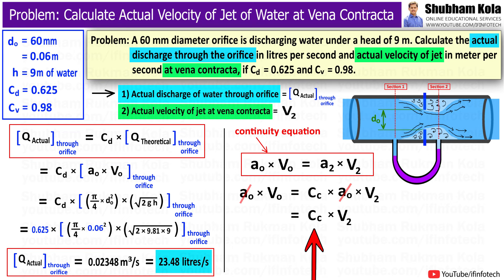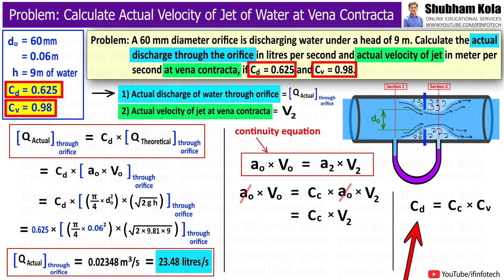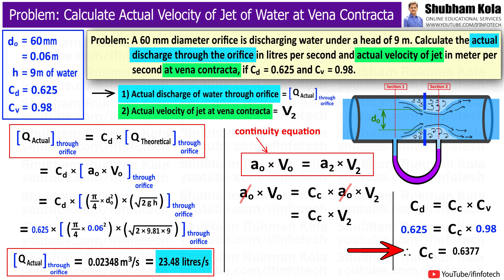Here CC is the coefficient of contraction, which we can calculate using the values of CV and CD, because CD = CC × CV, where CD = 0.625 and CV = 0.98. Therefore, CC = 0.6377, so I will substitute this value in the equation.